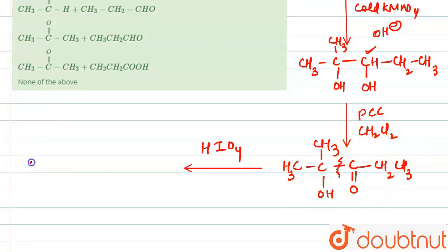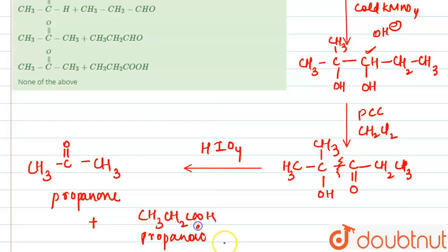So the product formed will be CH3-C=O-CH3, that is propanone, along with CH3-CH2-COOH, that is propanoic acid. So these will be the two products formed: one is the propanone and the second one is propanoic acid.